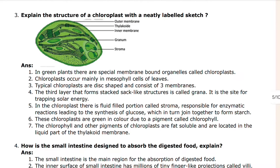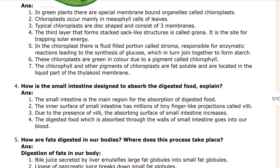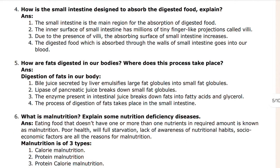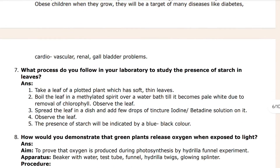Next you can see the question: explain the structure of a chloroplast with a neat labeled diagram. The answer is here. The fourth question is: how is the small intestine designed to absorb digested food? Explain. Up to the sixth question you can see: what are the value nutrients? Explain some nutrients.